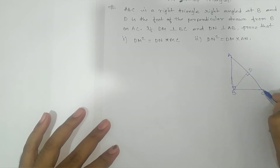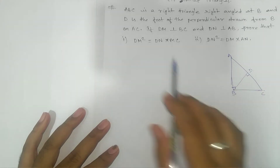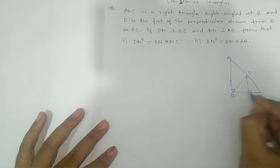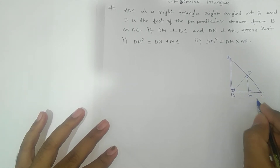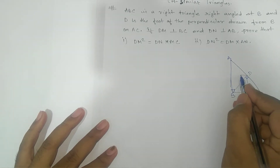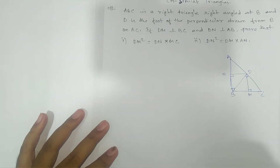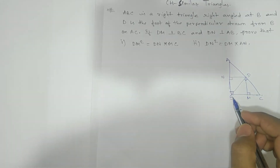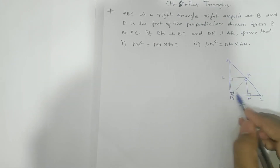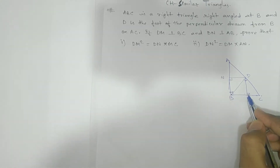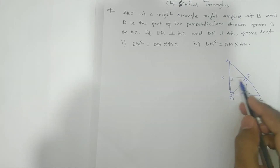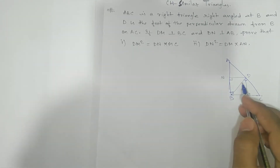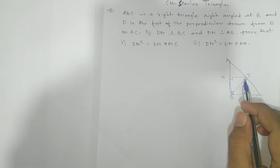D is the foot of the perpendicular drawn from B, so BD is perpendicular to AC. DM is perpendicular to BC, so we draw a perpendicular from D to BC and name that point M. DN is perpendicular to AB, and we name that point N. Now looking at the figure, BMDN is a rectangle because each angle is 90 degrees. By the angle sum property, subtracting 270 from 360 gives us 90 degrees for the fourth angle.